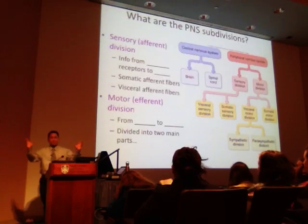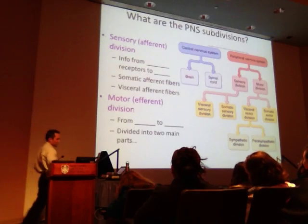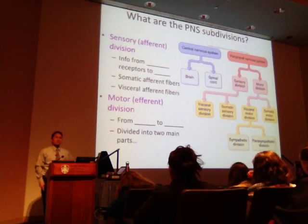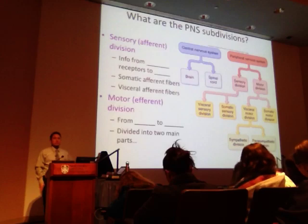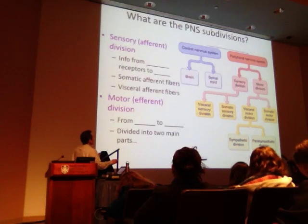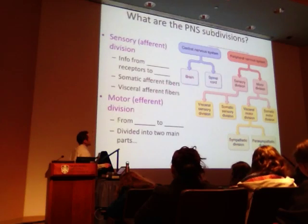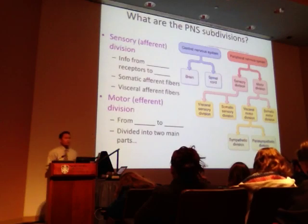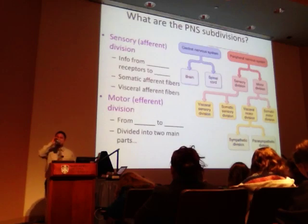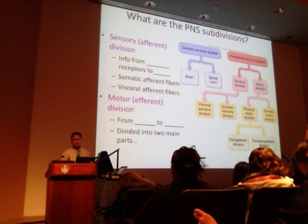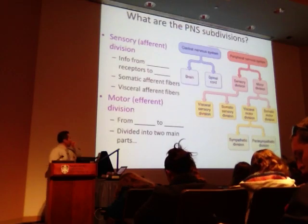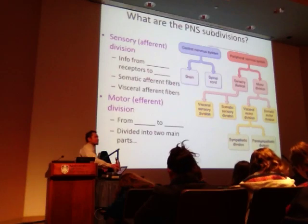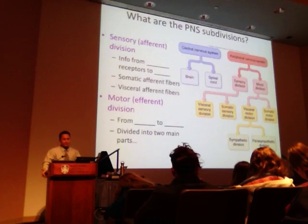If we take the peripheral nervous system and create divisions, we have our CNS — brain and spinal cord — and our PNS divided into motor and sensory. The sensory receives input via sensory afferent fibers. The inflow comes from sensory receptors and goes to the CNS. We can have somatic afferent fibers or visceral afferent fibers as part of the sensory division.